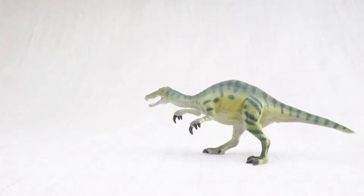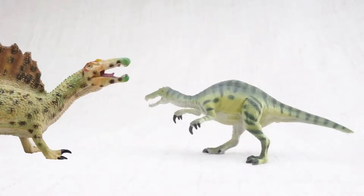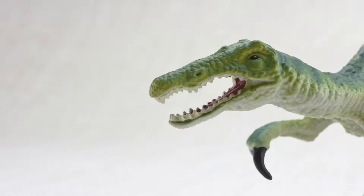Baryonyx was related to Spinosaurus and had a similar face, long and thin, just like a crocodile.